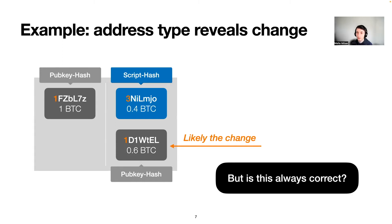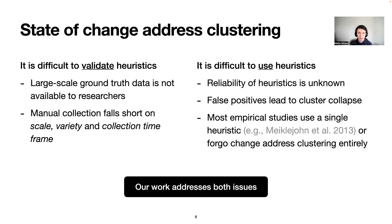But here's the question: is this heuristic always correct and how do we know? That's a really hard question because so far it has been very difficult to validate these heuristics. Large scale ground truth data is simply not available to researchers, and manual collection falls short on dimensions such as the number of transactions and the time frame. It's also difficult because false positives with change address clustering can very easily lead to cluster collapse — merging two clusters of different users that shouldn't be clustered together.